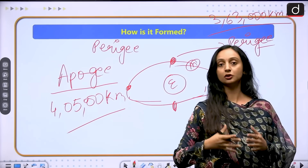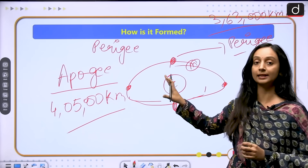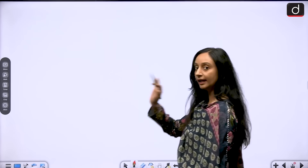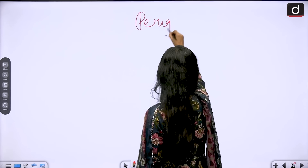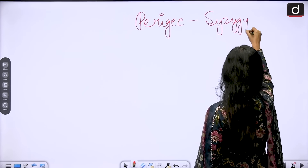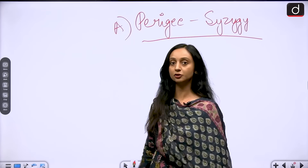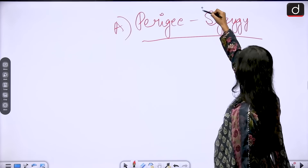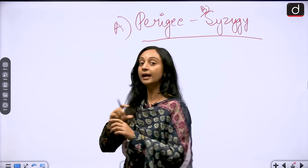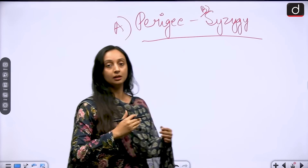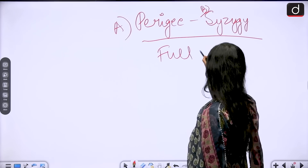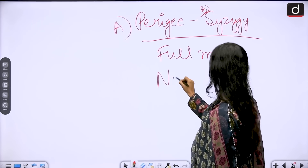This situation of a supermoon happens when the moon is at perigee, but that is not all. For a supermoon to occur, technically it is known as perigee-syzygy: the moon has to be at the closest point to the earth, and there also has to be the formation of a syzygy, which means that the sun, earth, and moon have to be in a straight line. When the sun, earth, and moon are in a straight line there will be two situations: full moon and new moon.